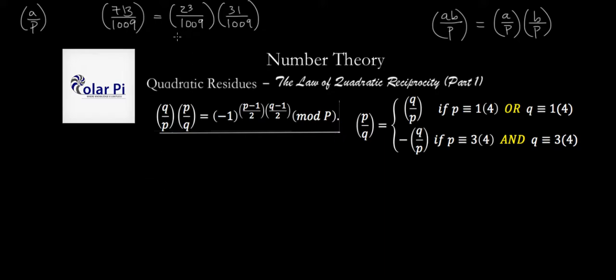Now first note that you couldn't apply the law of quadratic reciprocity on this at the start because we said that q and p need to both be odd primes, and while a thousand nine is an odd prime, 713 is not. But once you get here you can apply the law of quadratic reciprocity on this and on this and so finish solving for what this is.